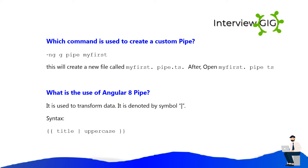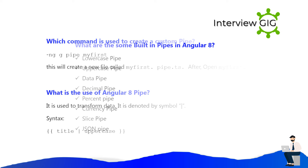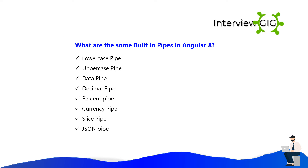What is the use of Angular 8 Pipe? It is used to transform data. It is denoted by the pipe symbol. Syntax: expression | pipeName.